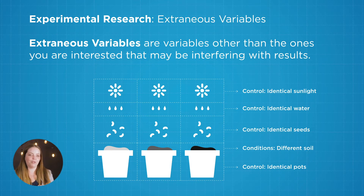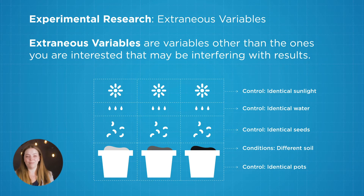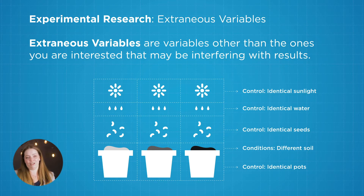Things like water or sunlight could definitely affect our study and kind of throw us off, making us think that maybe one soil is better than the other, when really the plant just got more sunlight. When we have control over those extraneous variables and make them the same, we're making sure that the actual soil is causing the difference in plant growth and not anything else.